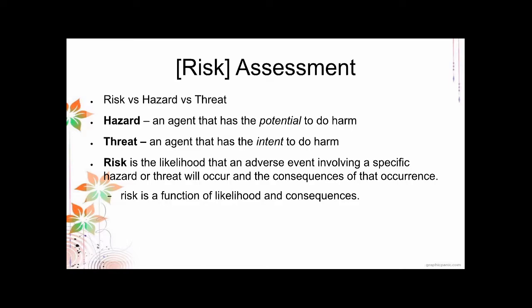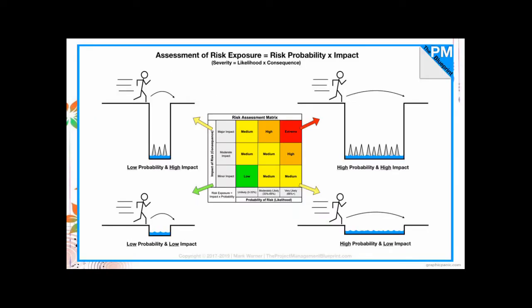Risk is a function of likelihood and consequences. How likely is the hazard or threat to occur, and what is the consequence of that hazard or threat to us and to the environment? Let's look at this risk assessment matrix. Basically, we are looking at the severity, which is a function of likelihood and consequences. We have four scenarios.